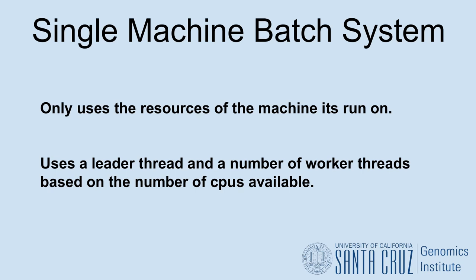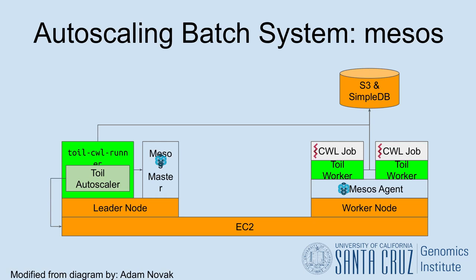Let's take a look at one of our auto-scaling batch systems. Toil's default architecture for running on AWS and Google is Mesos. Although Mesos is currently the best supported of the two auto-scaling batch system options, a lot of our recent efforts have been around making Kubernetes work robustly, with the eventual goal that Kubernetes will become the new default over Mesos. This diagram helps to give a simple overview of how the Mesos batch system is set up.